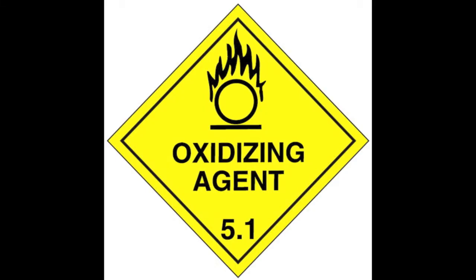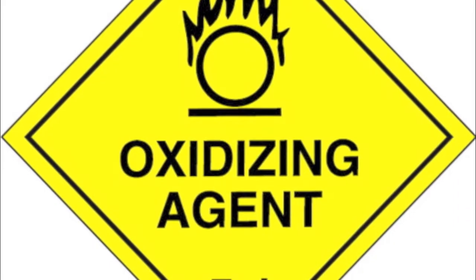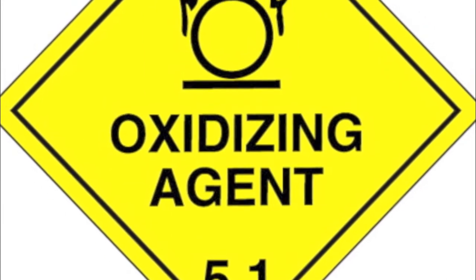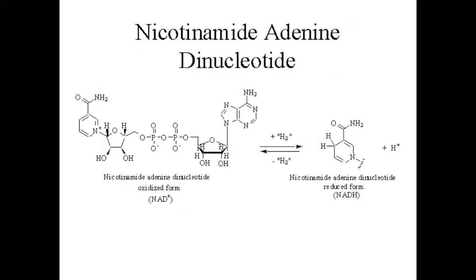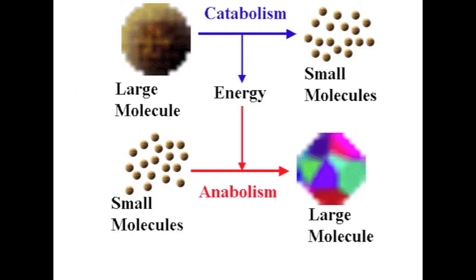Many reactions in metabolic pathways involve coenzymes. A coenzyme is an organic compound needed for an enzyme-catalyzed reaction to occur. An oxidizing agent causes an oxidation reaction, so the oxidizing agent is reduced. When a coenzyme gains hydrogen atoms, the coenzyme is reduced. A reducing agent causes a reduction reaction, so the reducing agent is oxidized. When a coenzyme loses hydrogen atoms, the coenzyme is oxidized. This diagram simplifies the differences between the two. Here's an example of a coenzyme that is a common biological oxidizing agent: NAD+. In this reaction, NAD+ is reduced to NADH. And here's one last diagram to sum up our project.